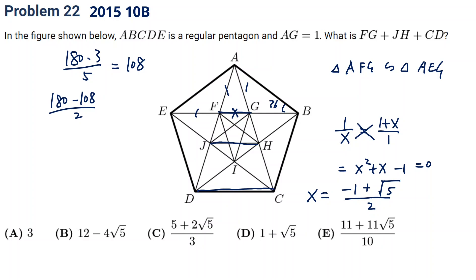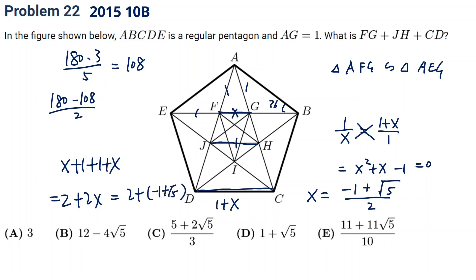We are looking for FG + FG + JH + CD. CD equals EG which is 1 + x, and JH equals AF which is 1. So in total it's x + 1 + 1 + x = 2 + 2x = 2 + (-1 + √5) = 1 + √5. I hope you enjoyed this video, and I'll see you in the next lecture.